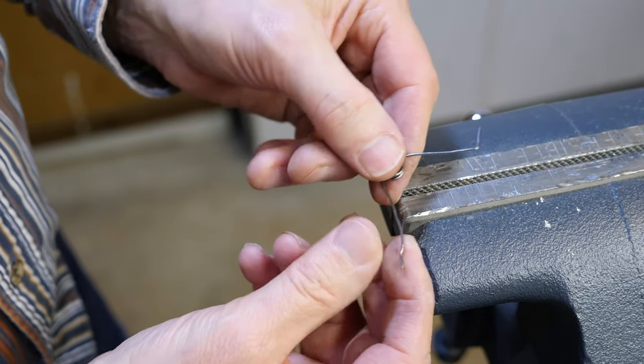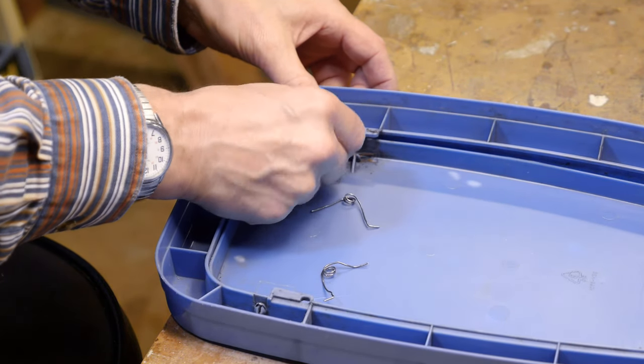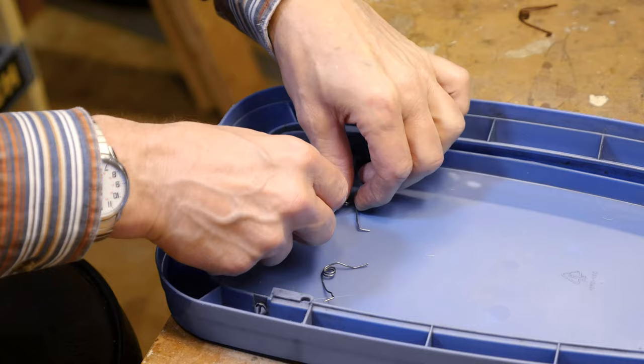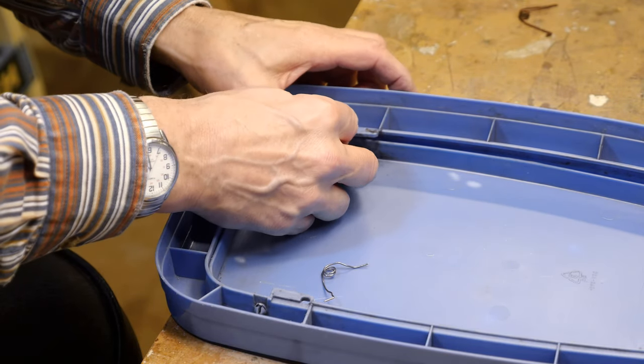And there you go, a final spring. Here's the trash can lid. I'm going to take the nasty, rusty spring out and insert my two new springs. This one goes in pretty easily and it fits perfectly.